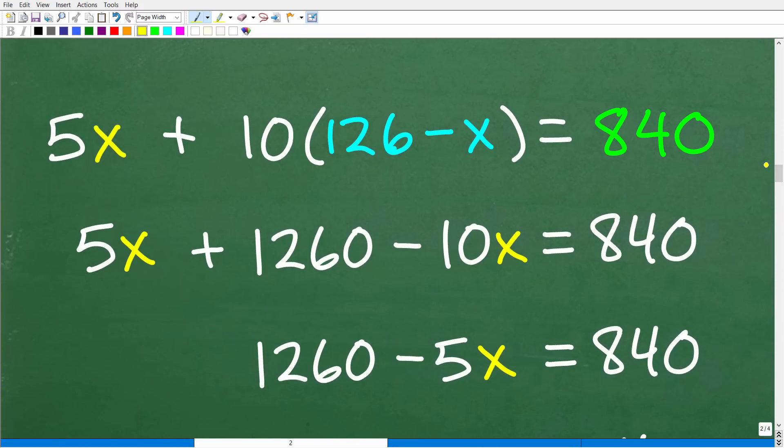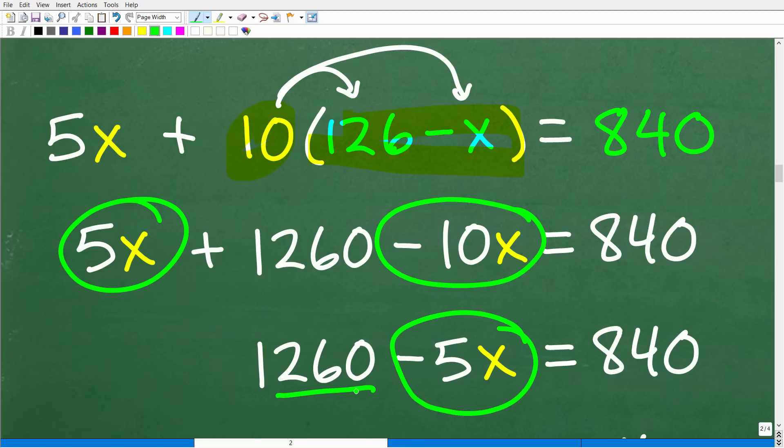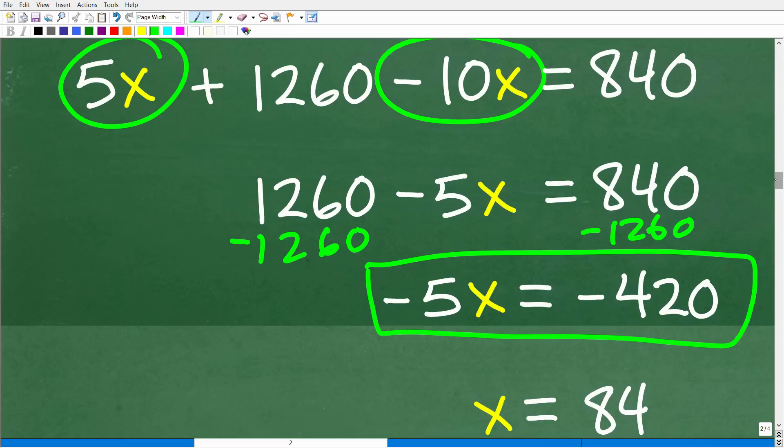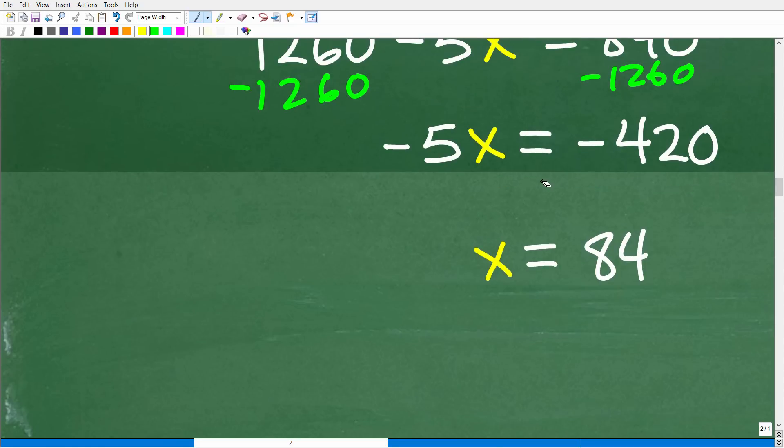Okay. So here is our lovely equation. 5X plus 10 parentheses, 126 minus X parentheses is equal to 840. So let's go ahead and solve this lovely linear equation. Okay. So first things first, right here, we have a distributive property situation. So we need to take care of this. So 10 times 126 is going to be 1,260. And then this 10 times that minus X is going to be negative 10X. All right. So at this point we need to combine like terms. So I have a five X and a negative 10 X. So that's going to be a negative five X. So I have 1,260 minus five X is equal to 840. So what do we need to do now? Well, I need to move all my numbers to the other side and have my variable terms on left. So I'm simply going to subtract 1,260 from both sides of the equation. Then I'm going to end up with negative five X is equal to negative 420. I've got to be careful with those positive negative values. And finally, to solve for X, all I have to do is divide both sides of the equation by negative five and I end up with X is equal to 84.